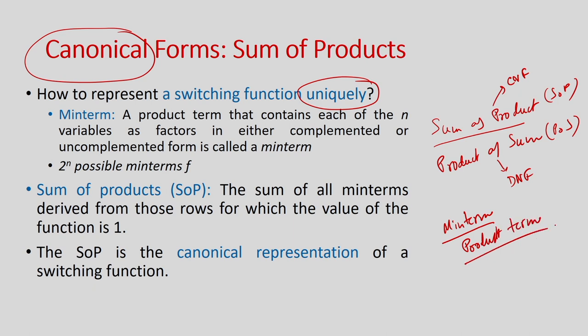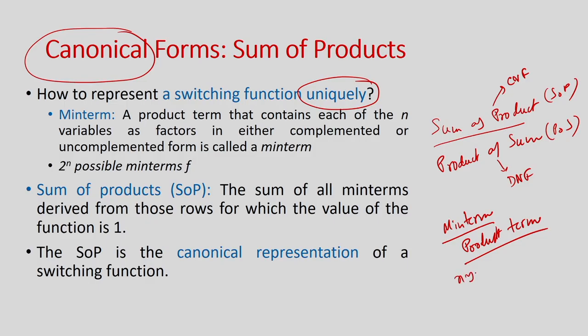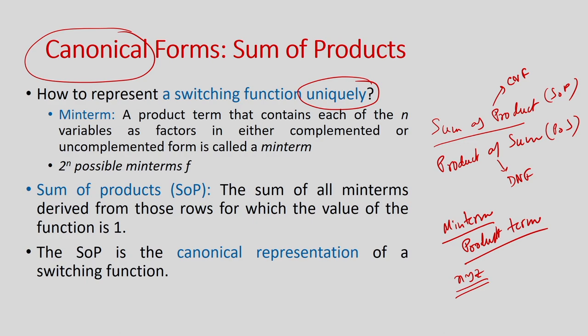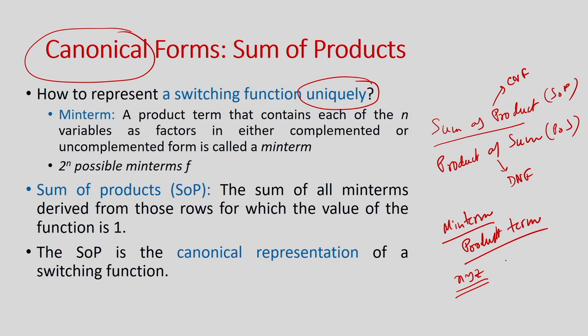For Sum of Product, the term is called a minterm or product term. A product term is basically a product of switching variables. For example, with variables x, y, z, each minterm consists of all variables in either normal or complement form. So the possible product terms include x, y, z, x bar, y bar, z bar, x·y bar·z bar, x·y bar·z, and so on — there will be 8 possible such minterms.